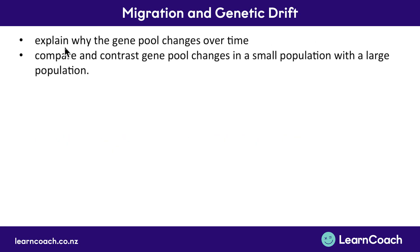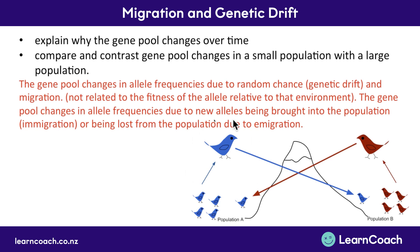Let's look at why the gene pool changes over time. There are changes in how often alleles occur due to random chance — which is genetic drift — and due to migration, so things coming and going. To avoid confusion with natural selection, which we'll cover in a future video, this isn't related to how fit or suitable populations are to their environment. The gene pool changes in allele frequencies because new alleles come into a population when somebody immigrates, or alleles can be lost due to emigration. Alleles may also be lost due to genetic drift.